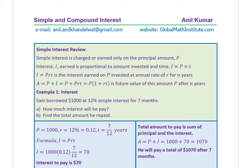Let's review a few more concepts about simple interest. Simple interest is charged or earned only on the principal amount P. The interest earned is proportional to the amount invested and the time T — more you invest, more you earn; more time you invest for, more interest you get. This proportionality becomes an equation I equals P·R·T, where R is the constant of proportionality, defined as the rate of interest.